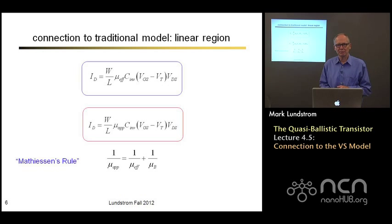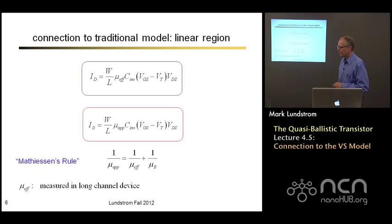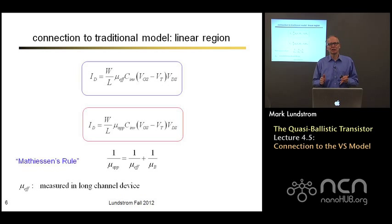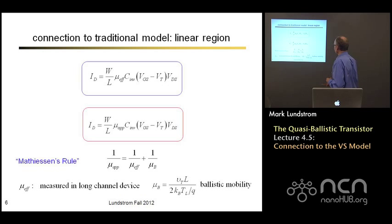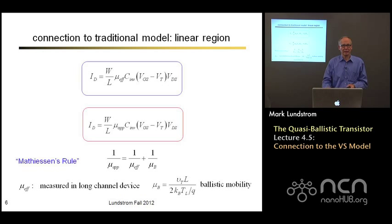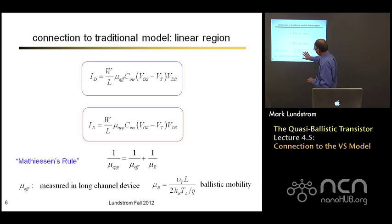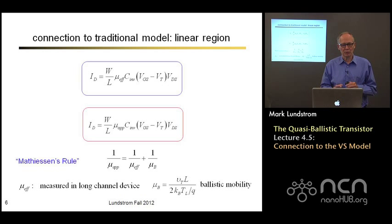Adding scattering mechanisms: when you have two different scattering mechanisms each giving some mobility, semiconductor people use what's called Matthiessen's rule — one over the total mobility is one over mobility due to mechanism one plus one over mobility due to mechanism two. We're seeing the same thing here: one over the apparent mobility is one over the real mobility plus one over the ballistic mobility. To measure the real mobility, we should really measure it in a long-channel device where mobility is a well-defined concept. The ballistic mobility is proportional to channel length, so for very short channels it dominates and we're at the ballistic limit.